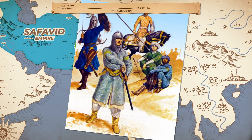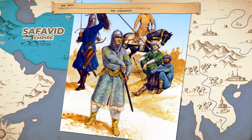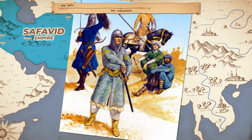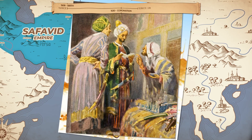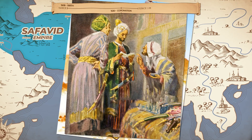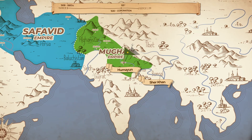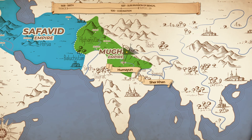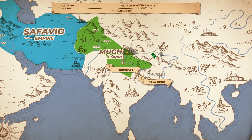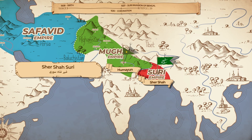Sher Khan was managing to pay them because he was protecting a wealthy widow from the Lodi establishment. Her money and his leadership created a formidable force. Initially, he paid off the Mughal governors with tribute to keep himself safe while he built power. By 1537, he was powerful enough to invade Bengal and end the ruling dynasty. He crowned himself Sultan there, changing his name to Sher Shah Suri.